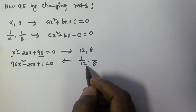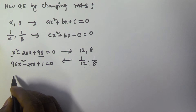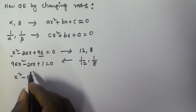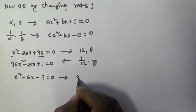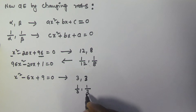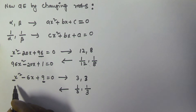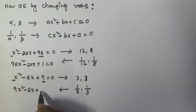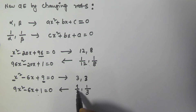For another example, take x² - 6x + 9 = 0, whose roots are 3 and 3. We need to find the quadratic equation whose roots are 1/3 and 1/3. Simply interchange the values of a and c — here a = 1 and c = 9 — giving 9x² - 6x + 1 = 0. So the roots of this new equation are the reciprocals of the previous roots.